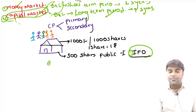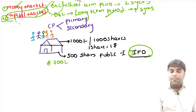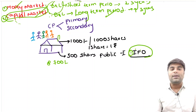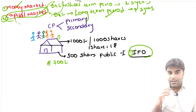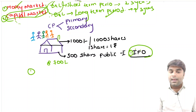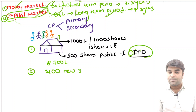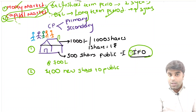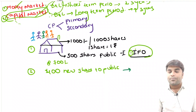Now the company is left with 700 shares. Understand: if this company is running well and the owners decide to expand to another state, they require additional money — imagine they require 300 rupees extra. So this company again went for issuing 400 new shares to the public. We call this a Follow-on Public Offering.